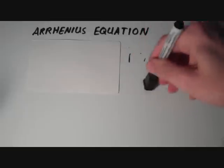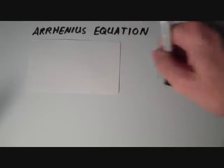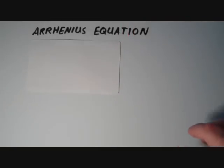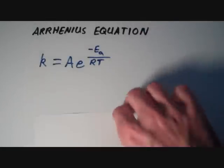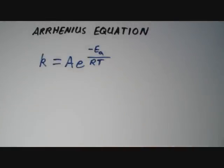And in general, the way that we quantify the temperature dependence on the rate constant, and thus the temperature dependence on the overall rate of the chemical reaction, is by this equation: K equals A times e to the negative EA over RT.